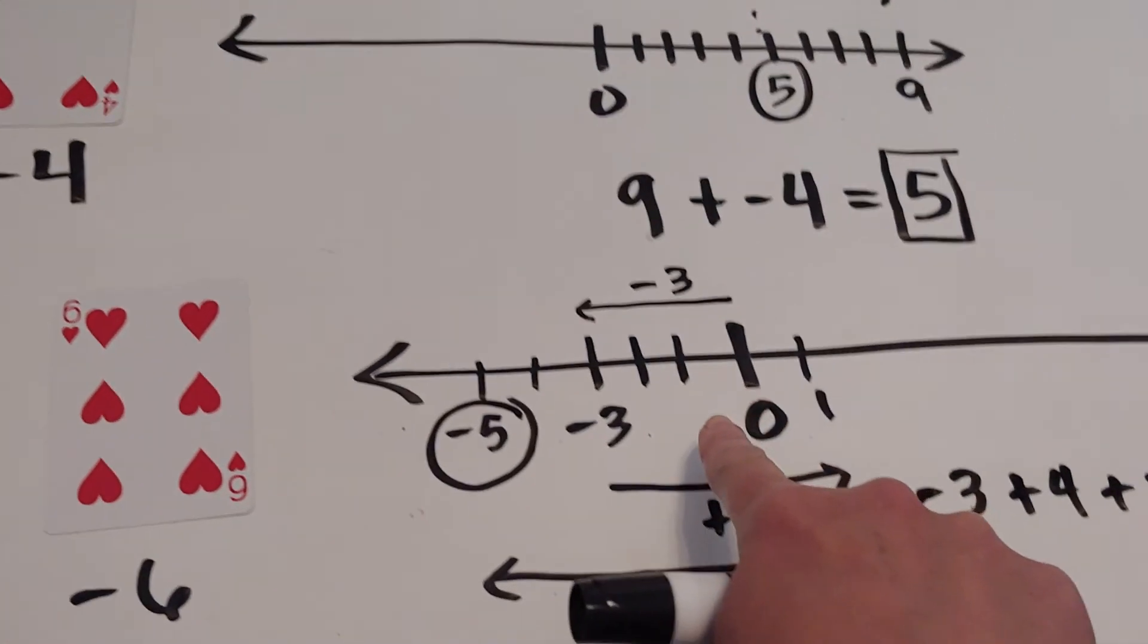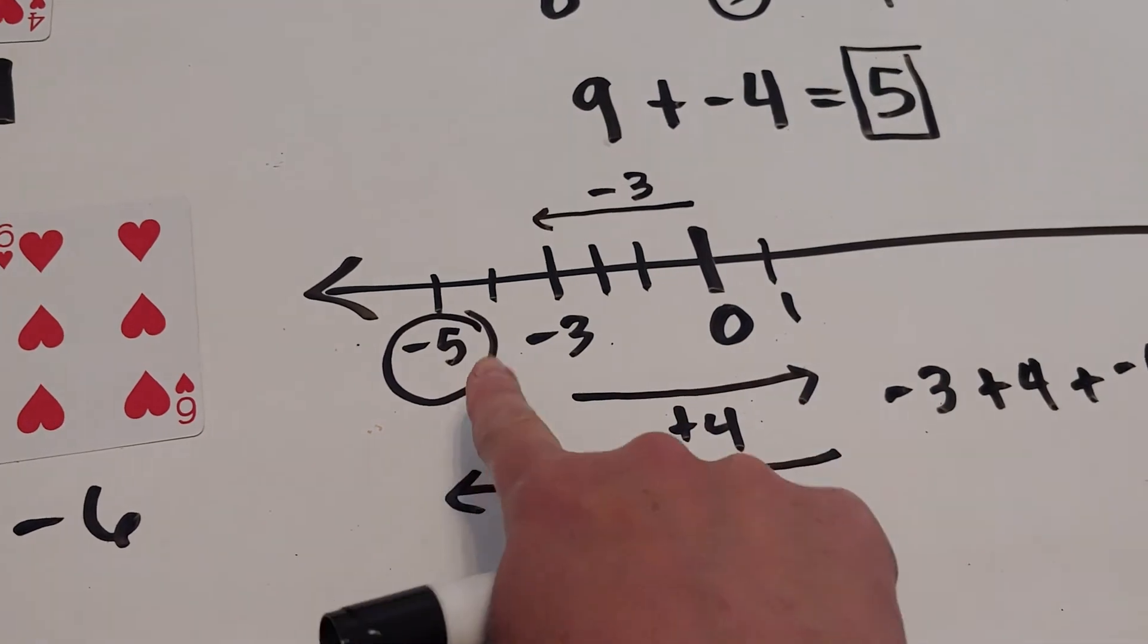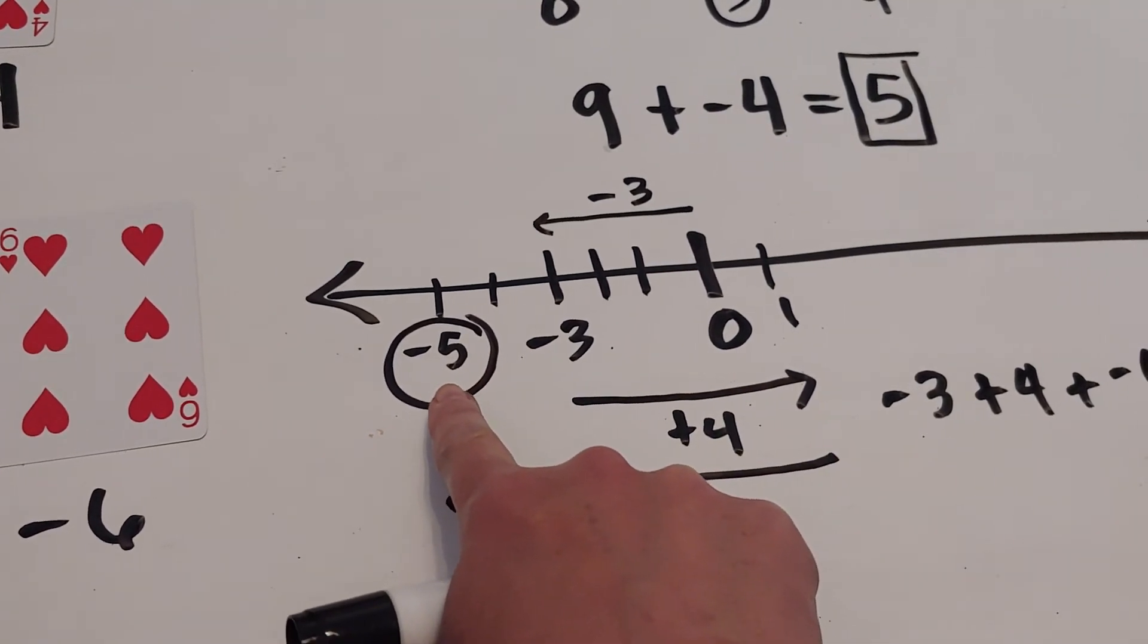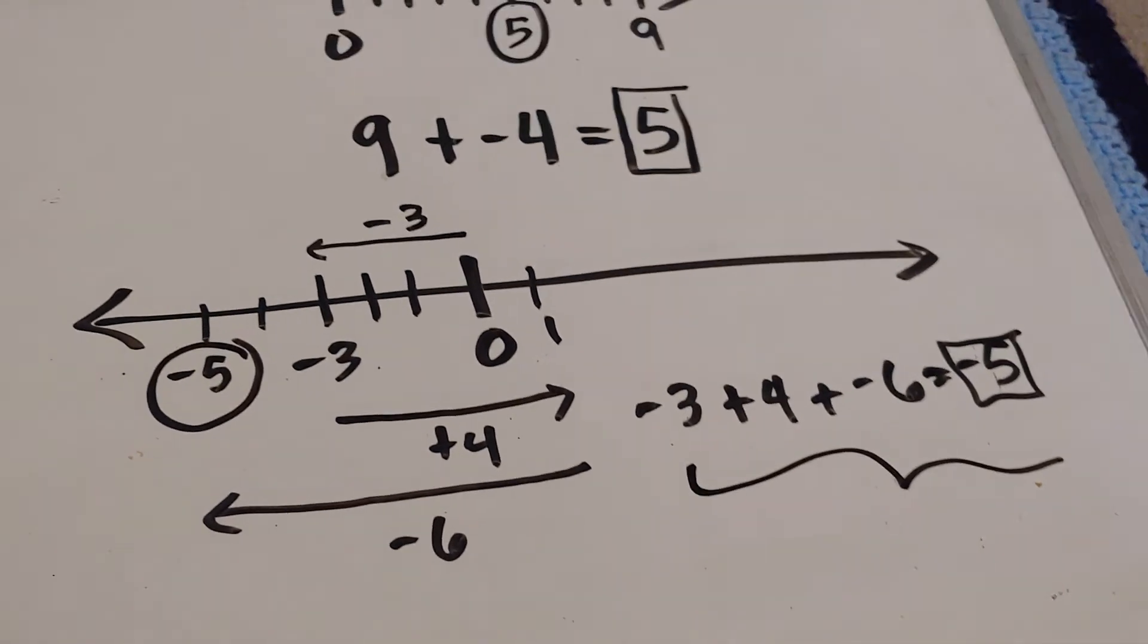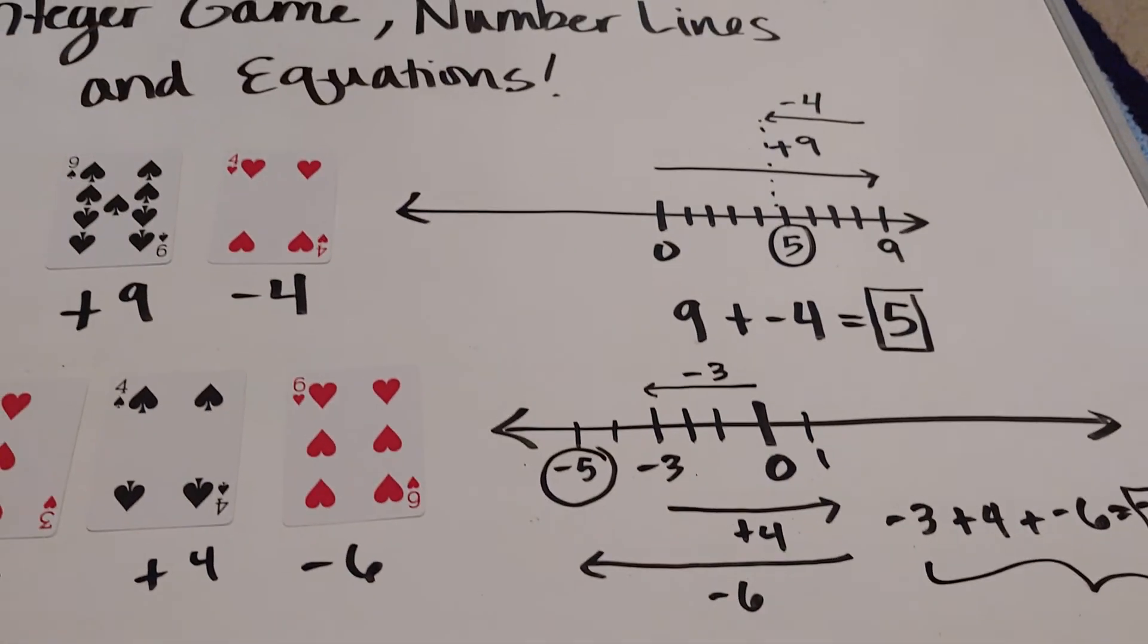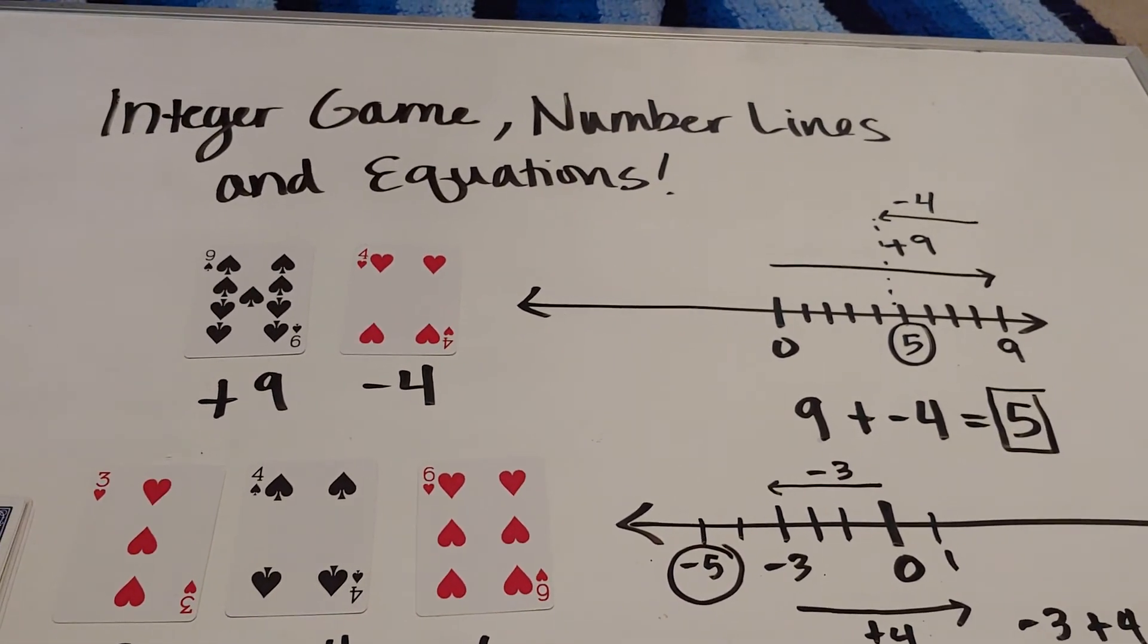The cards lead to the arrows, which lead to the net result of our answer. Then we write it all as an equation. That's the integer game with number lines and equations.